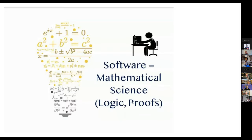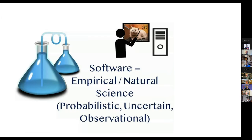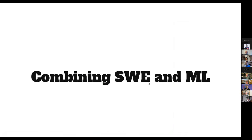In your community, software has been defined as a mathematical science, interested in logics and proofs — a long tradition that's really important. But I also see a change: software can be looked at as an empirical or natural science. Now we're dealing not with logic but with probability, uncertainty, and observations. We do experiments and we teach our machines from examples rather than going from first principles. That's a change in how we look at things.